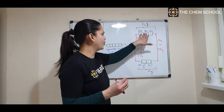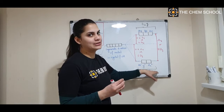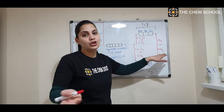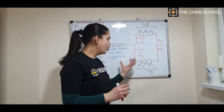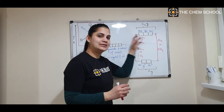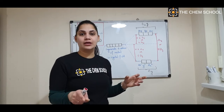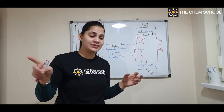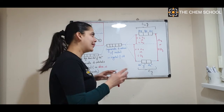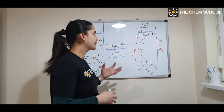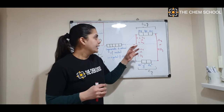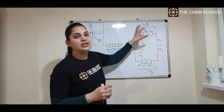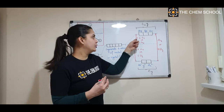The energy difference between t2g and eg in a tetrahedral complex is called delta t, or 10 dq. For those who haven't seen the previous video on splitting of d orbitals in octahedral complexes, I will attach the link — please watch that first, then come to this. Now, let's talk about the energy values in terms of t2g and eg.